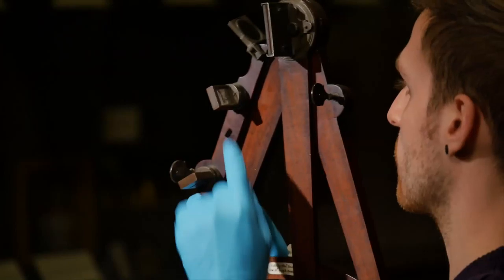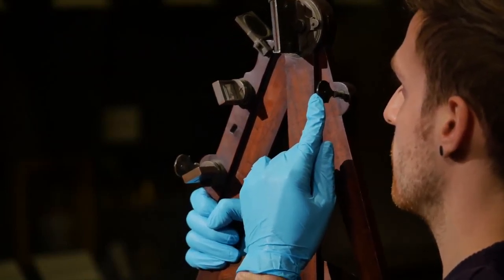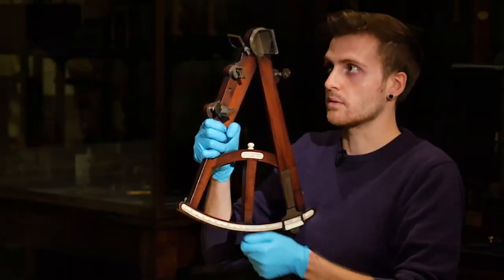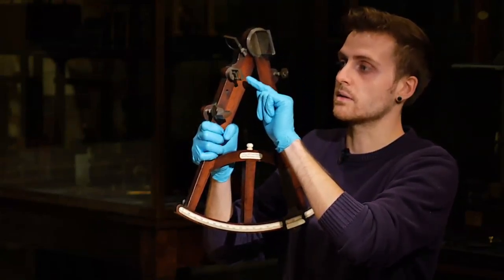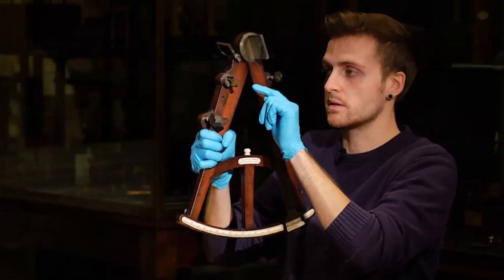When viewed through this eyepiece, light from the sun would then be reflected off this first mirror and onto this second mirror alongside the window, so that the image of the sun could be seen alongside the horizon.